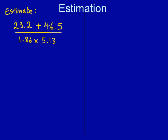So here is our first question. We're asked to estimate the sum on the board. The top half of the fraction is 23.2 add 46.5, and the bottom half of the fraction is 1.86 times 5.13.